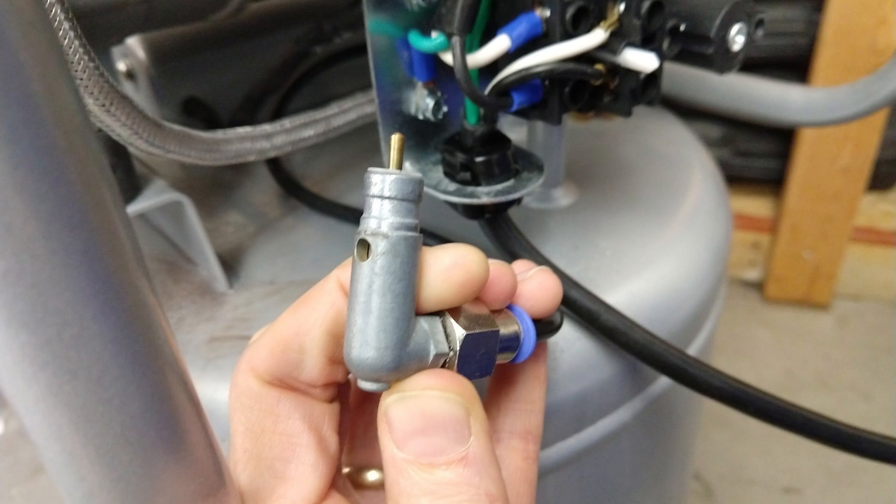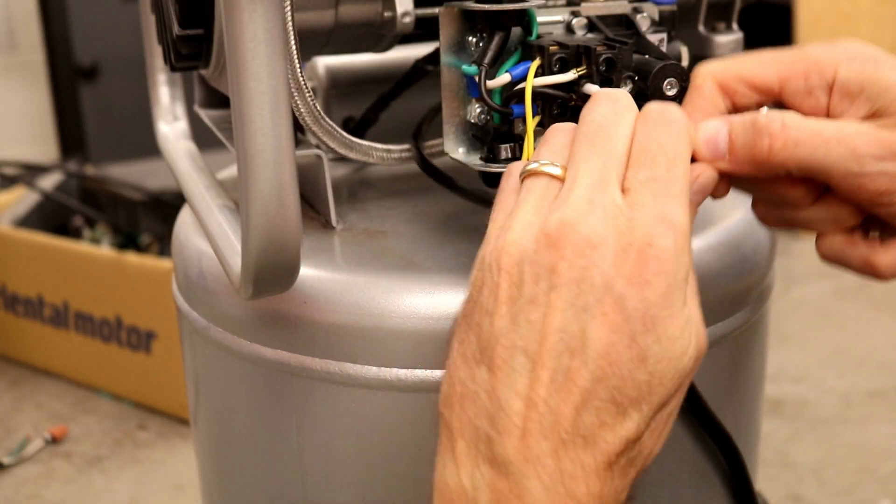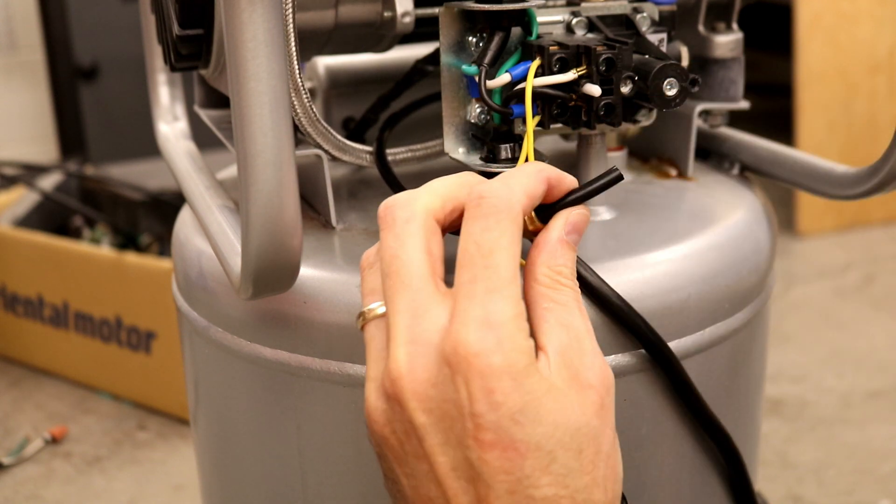The stock unloader is a Schrader valve depressed by a plate inside of the pressure switch and this works well except my pressure switch must be lacking the return spring. This is the otherwise quiet compressor when running but unloading the airlines is loud.